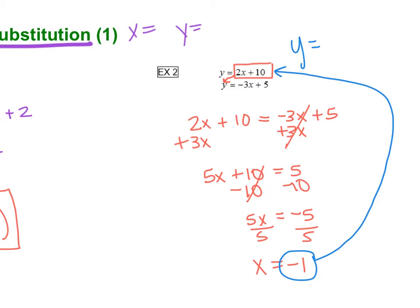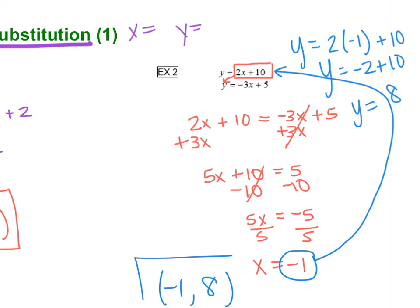So it says y equals 2x plus 10. Well, we know what x is. So 2 times negative 1 plus 10. So y equals negative 2 plus 10, and negative 2 plus 10 is 8. That's going to be the easiest spot to plug your variable back in. So I always box it out, and then I know that that's where my variable goes in the end. So our final solution is the ordered pair: negative 1 comma 8. And we just solved by substitution.